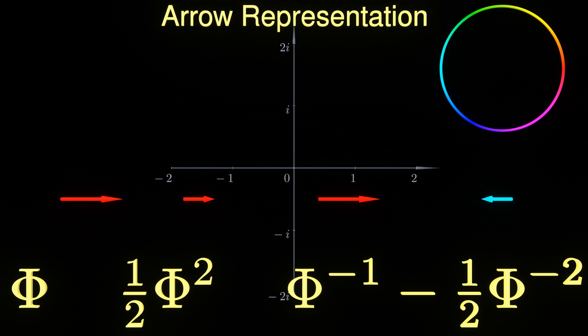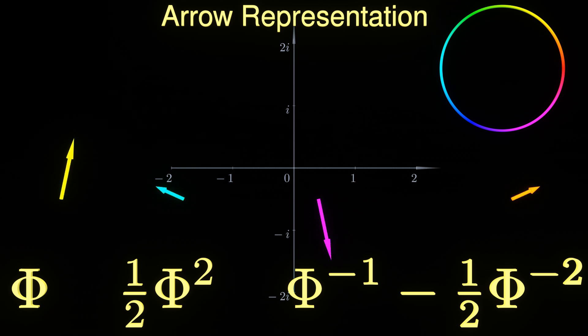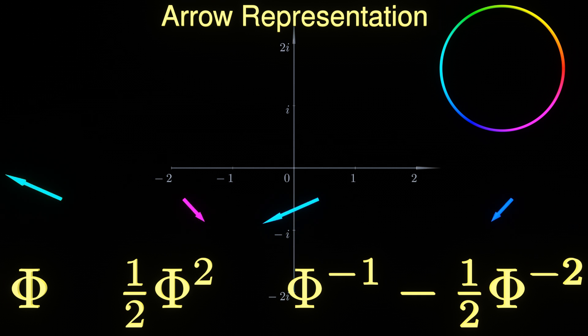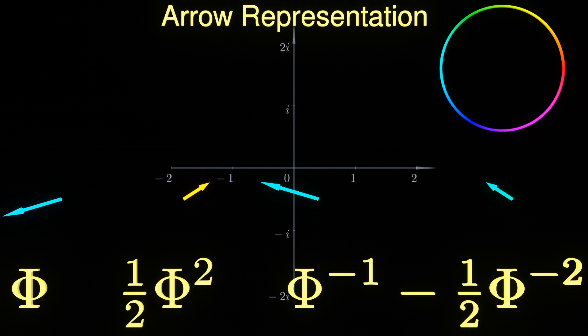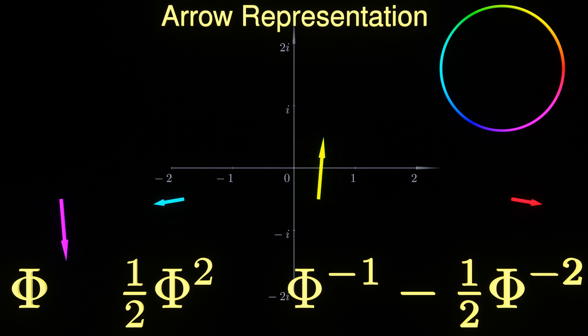The exponent leaves its imprint in the way the arrow rotates. Positive exponents yield counterclockwise rotations and negative exponents cause the arrow to spin clockwise. For powers of 2 or minus 2, the corresponding arrows rotate twice as fast. But don't forget, each of the terms is just a complex number.